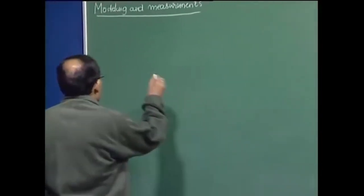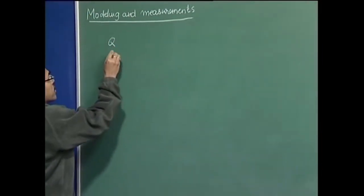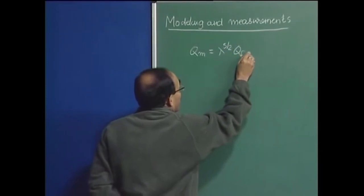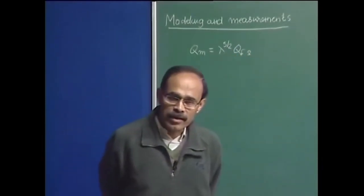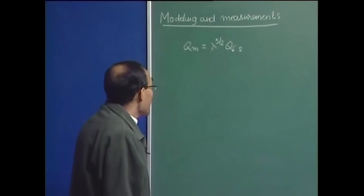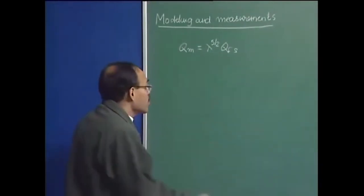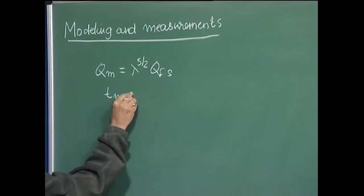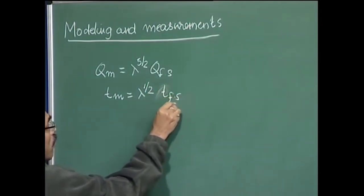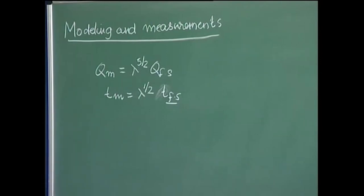The flow rate scaling criteria, which I mentioned in the context of a gas-stirred ladle system, is: Q_model = λ^(5/2) × Q_fullscale. I also talked about kinematic similarity, and if there is geometric similarity between two ladles and flow rates are scaled in accordance with this equation, the corresponding time scale in the model and full scale are related by λ^(1/2). Now let us take a typical example to show how you really proceed to model a gas-stirred ladle system.